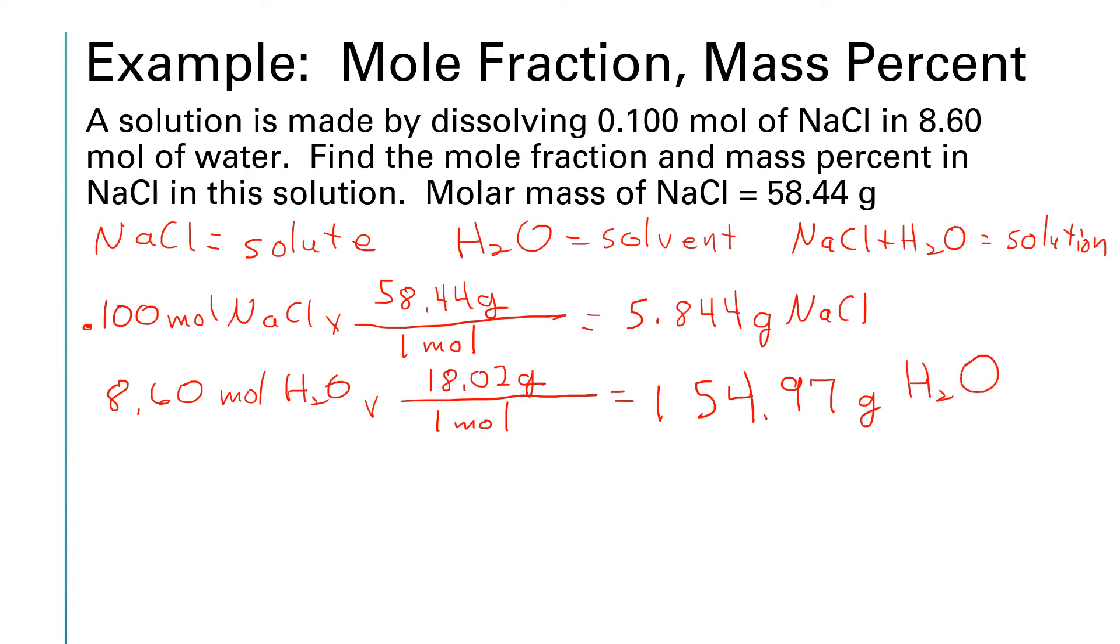To find the mole fraction, the mole fraction of salt will be given by the moles of salt, which are 0.1, divided by the total moles. Well, we have 0.1 moles from the salt plus 8.6 moles from the water. I'm going to run that denominator through my calculator first, which is going to give me 8.7 down there in the bottom. So I'm going to have 0.1 divided by 8.7.